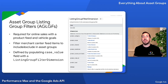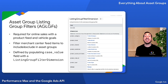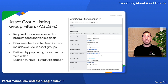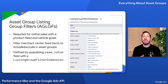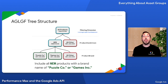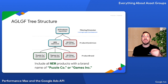Asset Group Listing Group filters represent segments of products in your Merchant Center feed, as defined by a listing dimension such as a product brand. You indicate the dimension, such as a specific brand name, using the Case Value field. When you combine these Asset Group Listing Group filters, they start to look like a tree. This example would include all products in the Asset Group that have a condition of New and a brand name of either Puzzle Co. or Games Inc.